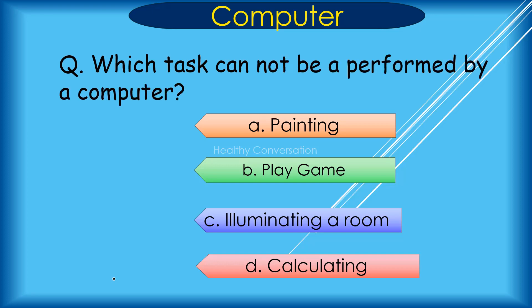Question: Which tasks cannot be performed by a computer? A. Painting, B. Playing a game, C. Illuminating a room, D. Calculating. Correct answer is C. Illuminating a room.